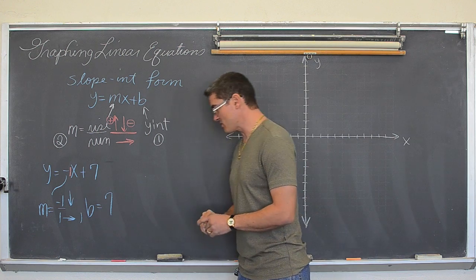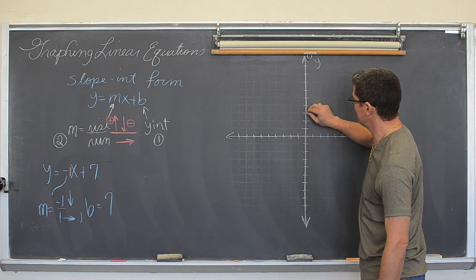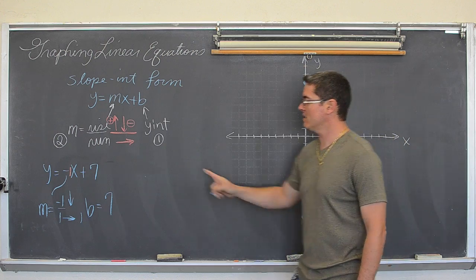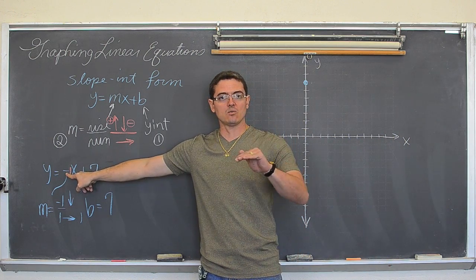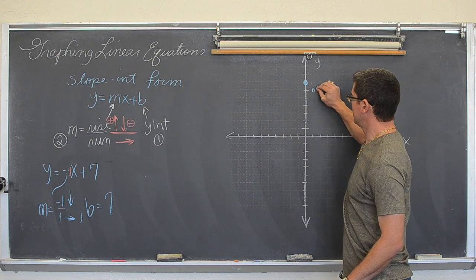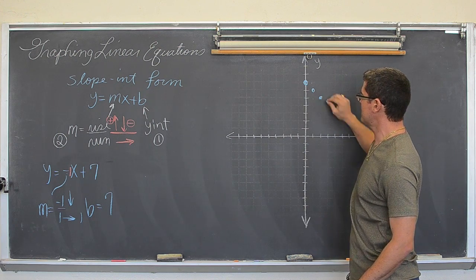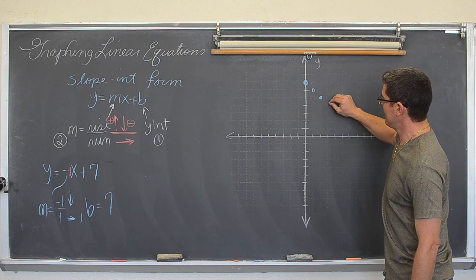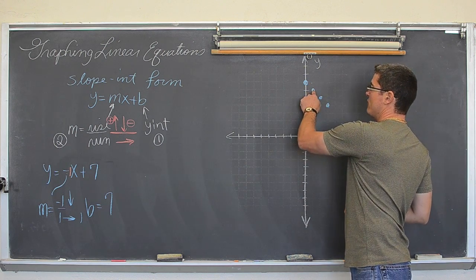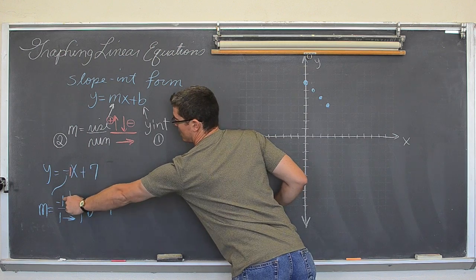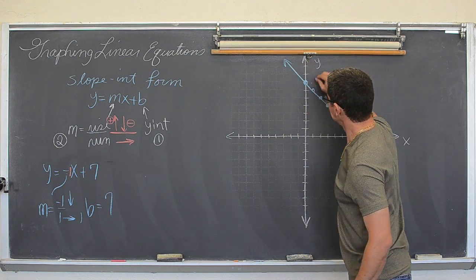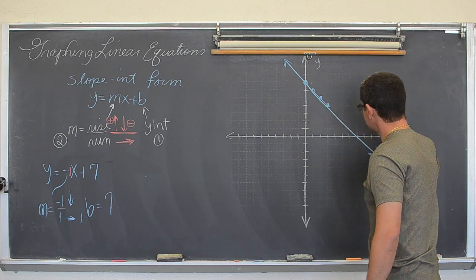So this line is going to cross the y axis at seven. So one, two, three, four, five, six, seven. And from there, because there is a negative in front of the x, we are going to go down one and over one. So down one and over one. Down one and over one. This repetition is not needed. I am just trying to make sure my line stays relatively straight. I am going down one and over one because of the negative one or the slope of negative one over one. So here is my line.